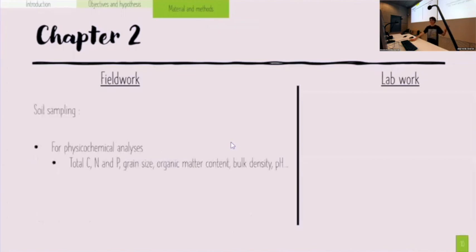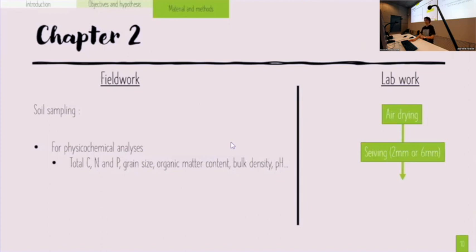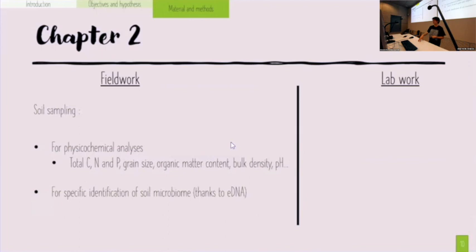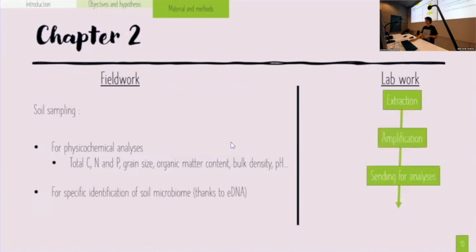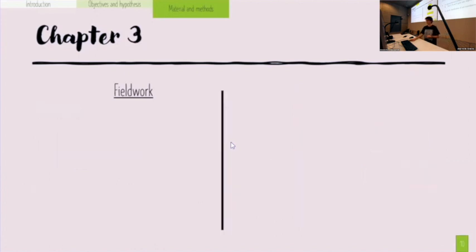For the second chapter on soil microbiome, I do soil sampling for physical-chemical analysis including total carbon, nitrogen, phosphorus, grain size, organic matter content, bulk density, and pH. Samples are air-dried, sieved at two or six millimeters depending on organic matter or mineral soil content, then sent for analysis. For soil microbiome, we perform environmental DNA extraction, amplification, and send for sequencing, followed by species identification using bioinformatics.